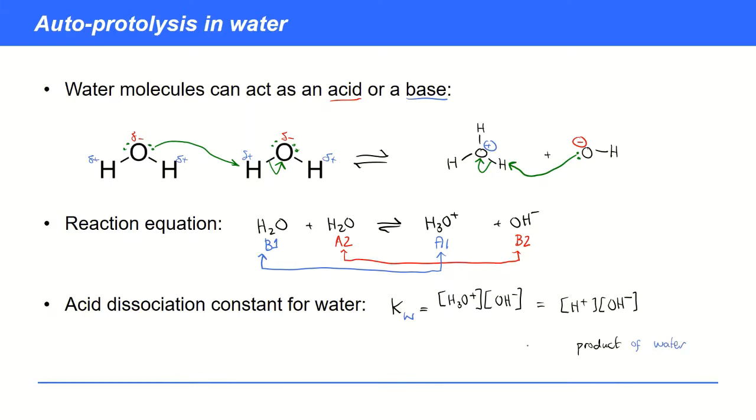It's always known as the ionic product of water. That's simply because it's got a product of concentrations, and it's known as the ionic product of water because we're making two ions in the process. This is the ionic product of water, Kw.